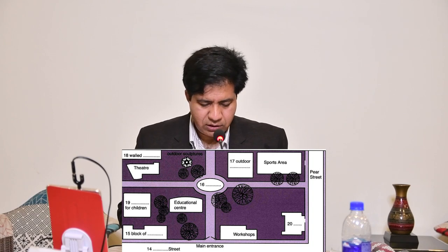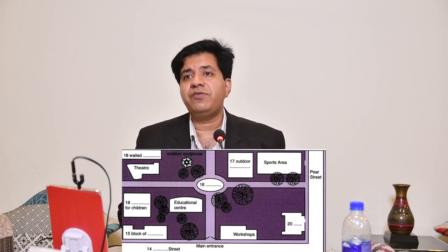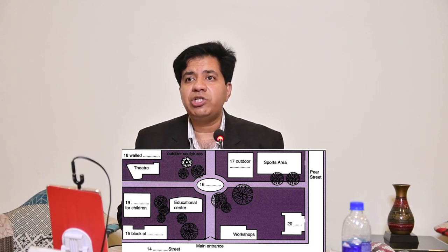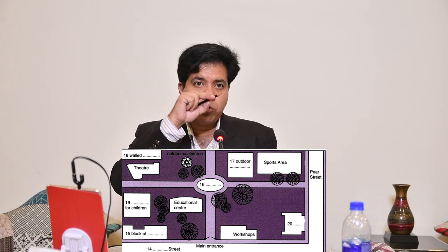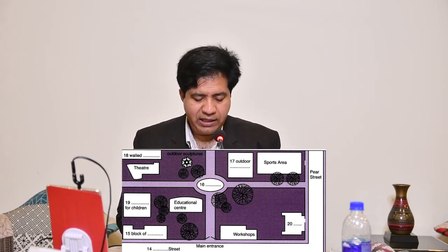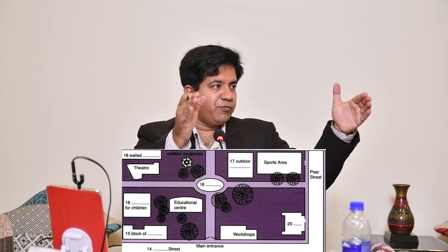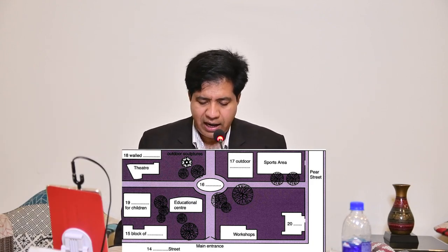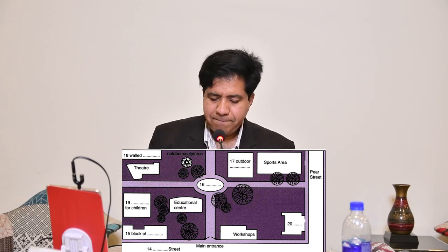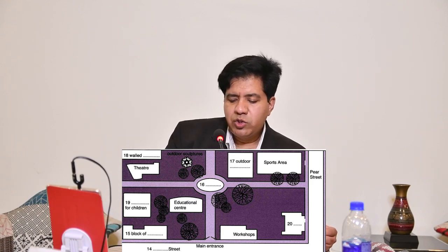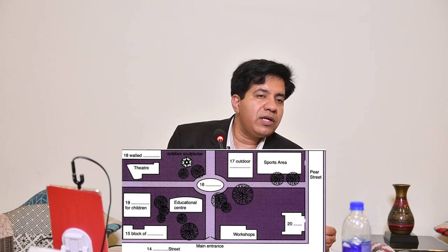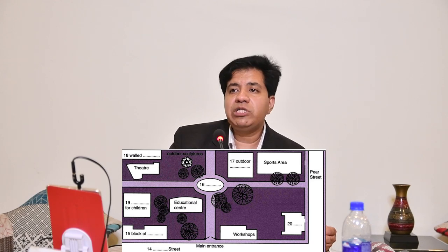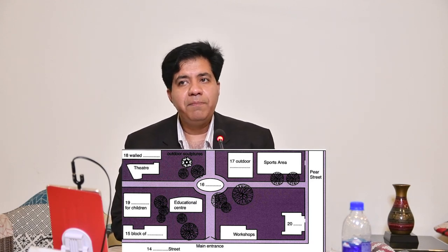Question number 19 is there for children — something related to children, like a play area or amusement park for children. Question number 20 is in the bottom right corner — workshops. You will follow this order in the audio. For maps, mainly they use prepositions — prepositions of place, prepositions of location.